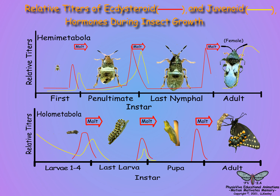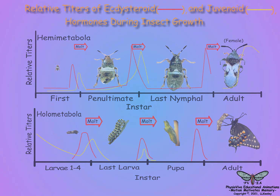Holometabolous species form a pupa when juvenoids are low at the last instar larval molt, and an adult when juvenoids are absent at the pupal-adult molt. The appearance of an instar depends on the protein synthesized by the epidermal cells, and is a function of endocrine-regulated gene expression. The next scene will discuss some of the physiological markers for holometabolous metamorphosis and the endocrine-dependent events that prepare the larva for metamorphosis.